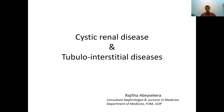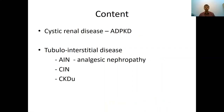We've briefly discussed cystic renal diseases and tubular interstitial diseases. We have also discussed different conditions including CKD, AKI, and glomerular diseases. Today I'm going to discuss tubular interstitial diseases very briefly and cystic renal diseases. Of that, I'm mainly going to discuss autosomal dominant polycystic kidney disease, acute interstitial nephritis, chronic interstitial nephritis, and a little bit about chronic CKDU.